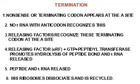Termination occurs when a terminating codon appears in the A site. There is no aminoacyl-tRNA which recognizes this codon, so what binds there is the releasing factor. Once the releasing factor binds, the completely formed peptide chain is released, the tRNA is released, and the 80S ribosome dissociates and is recycled.